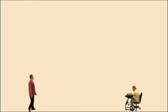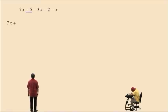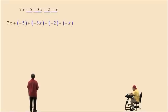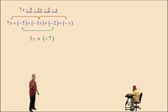Let's do some more here: 7x subtract 5 subtract 3x subtract 2 subtract x. We have all these subtractions, and we're going to get around that by writing all these subtractions as adding negative numbers. So we have 7x plus a negative 5 plus a negative 3x plus a negative 2 plus a negative x. Now we can add these in any order. Let's do the x's: 7x plus a negative 3x is 4x, plus a negative x is 3x. Now the numeric values: negative 5 plus a negative 2 is a negative 7. So we have 3x plus a negative 7, which is 3x subtract 7. That's our final answer.